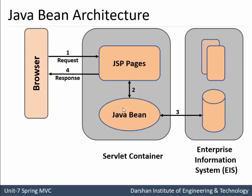Now, Java bean architecture. A request comes from a client browser and is forwarded to a JSP page or any other view page. That request is then forwarded to the Java bean. The Java bean, if required, will communicate with the enterprise information system, process the request, get the response back, and give it back to the JSP page by creating a UI component. Then the response is given back to the original client. This is the Java bean architecture.